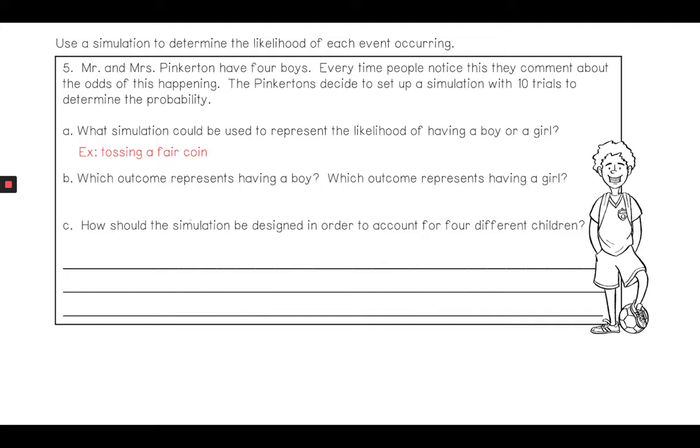Which outcome represents having a boy, which outcome represents having a girl? You can decide that, but I'm going to say that the coin lands on tails represents a boy, while landing on heads would represent a girl.